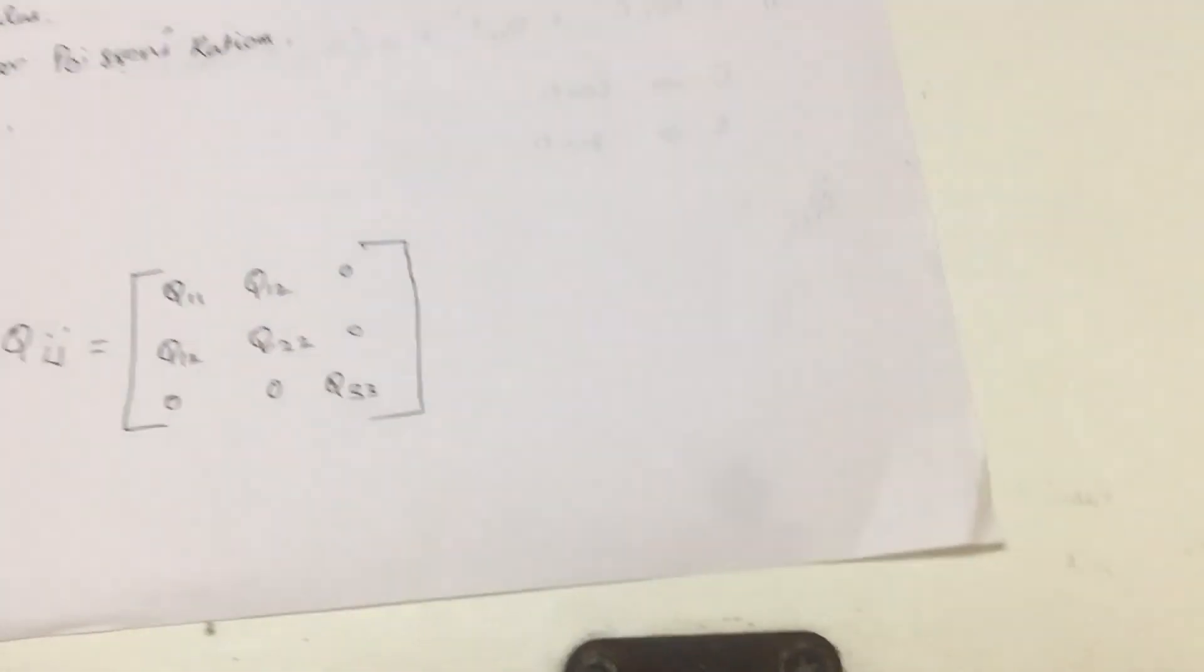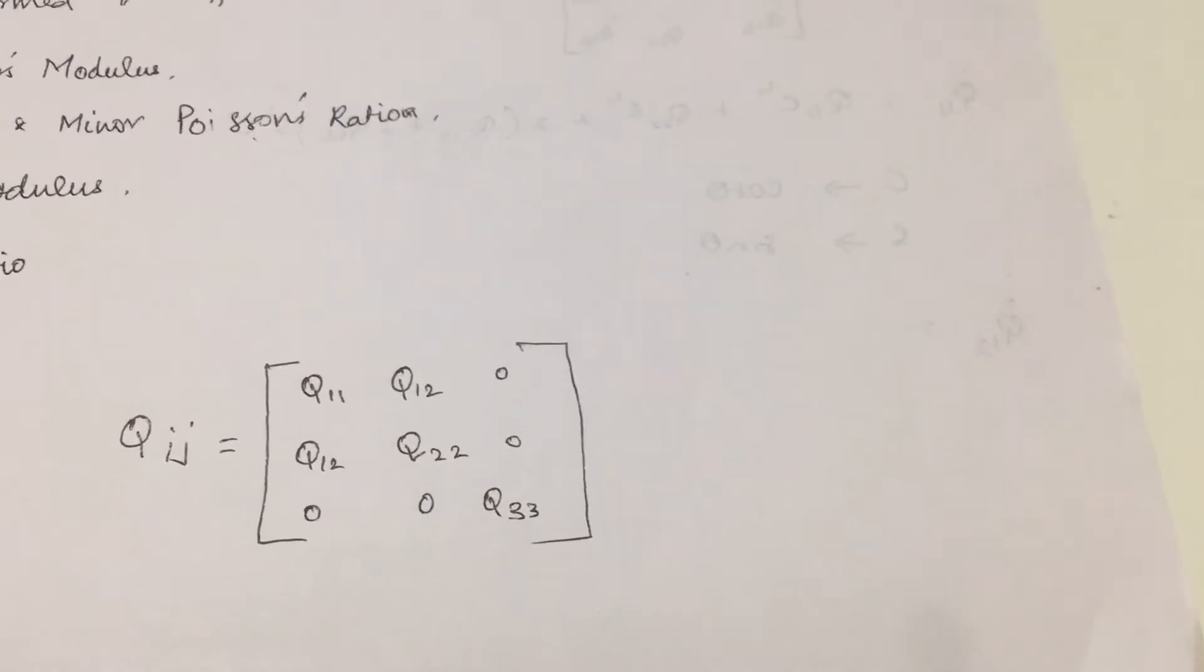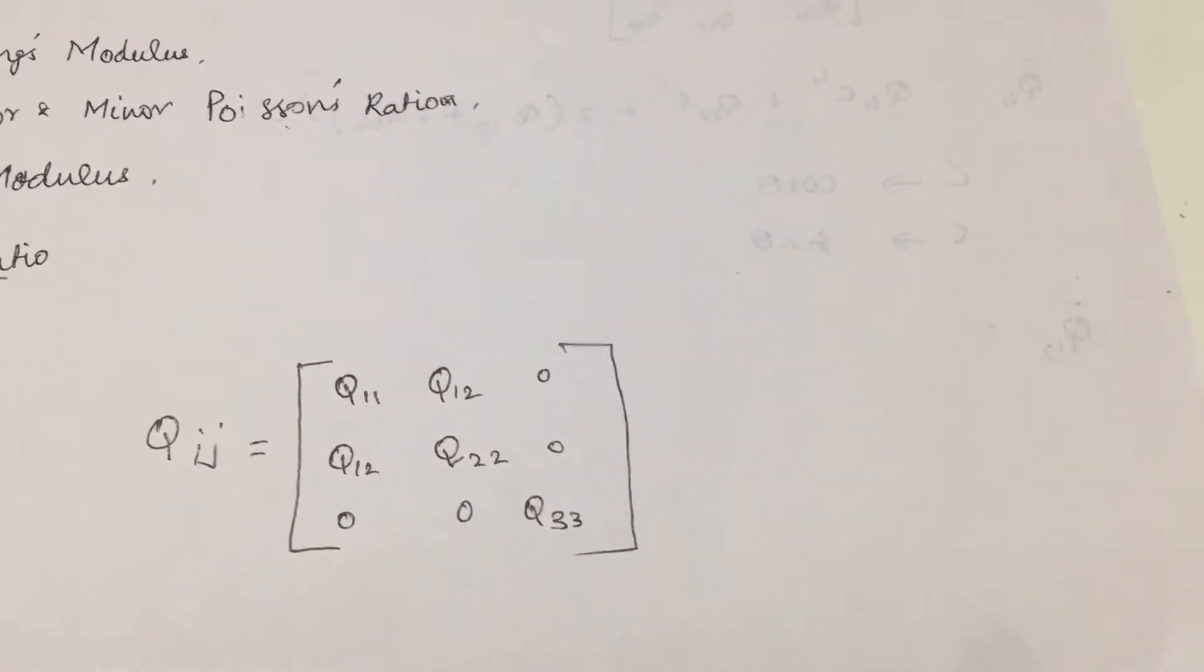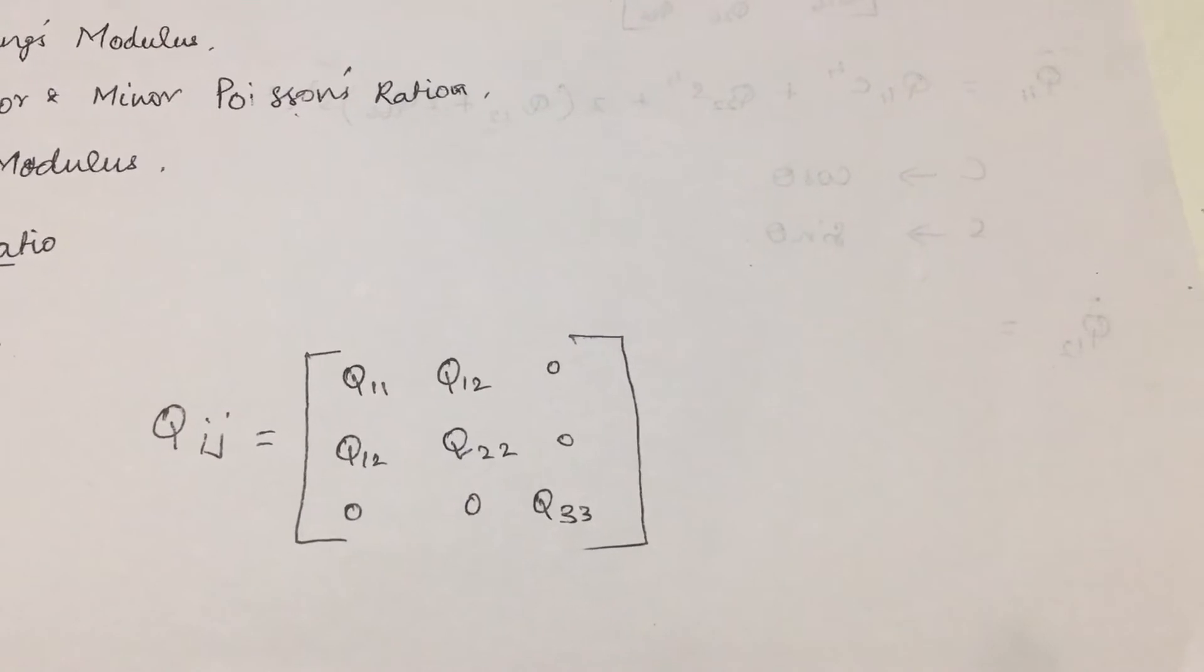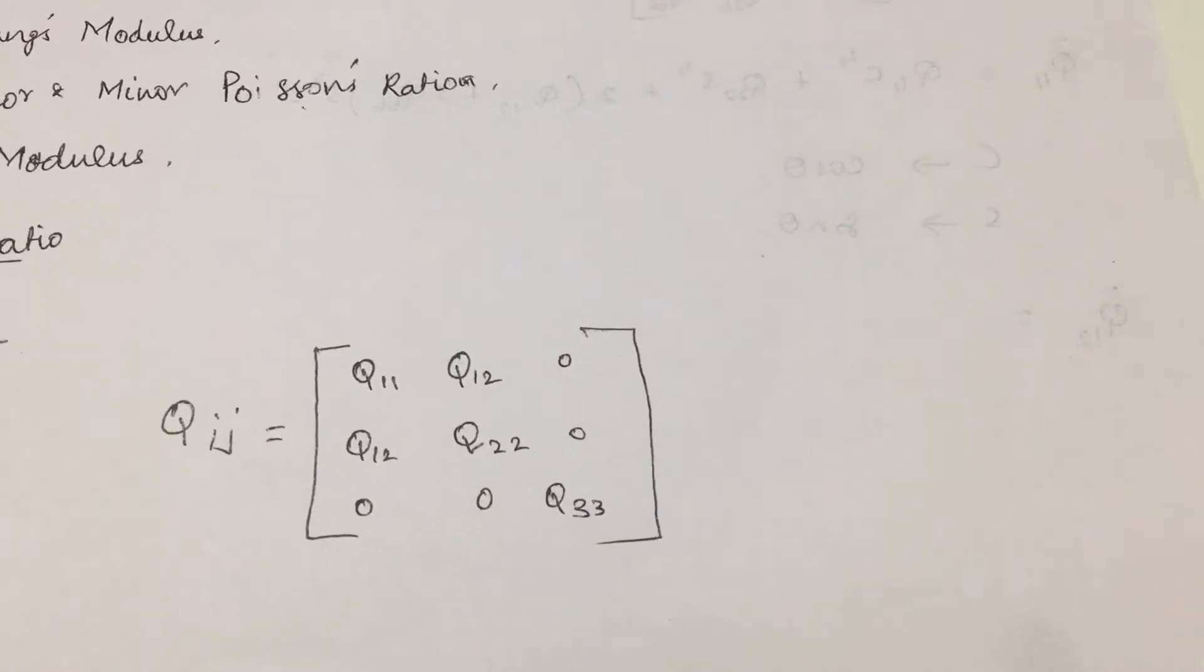It is a 3 by 3 matrix. Qij consists of Q11, Q12, 0 in the first row; Q12, Q22, 0 in the second row; and 0, 0, Q33 in the third row.